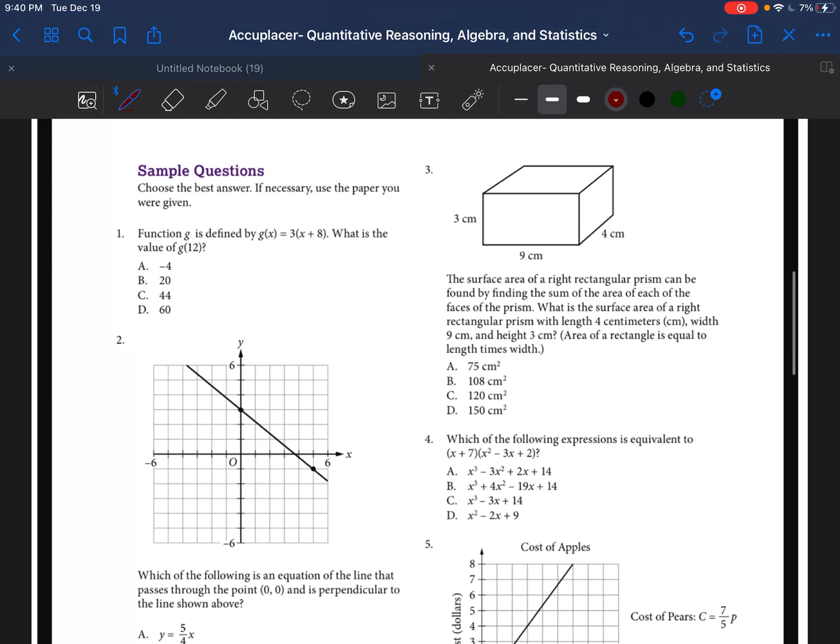Okay, so problem number one says function g is defined by g(x) = 3x + 8. What is the value of g(12)? So we're just going to plug in 12 wherever we see that x. So first we're going to do whatever is inside the parentheses, which is 12 + 8, which is equal to 20. And then 20 times 3 is 60. So our answer is going to be d.